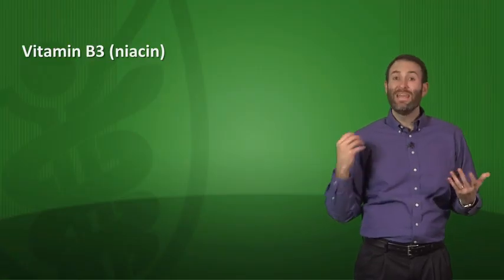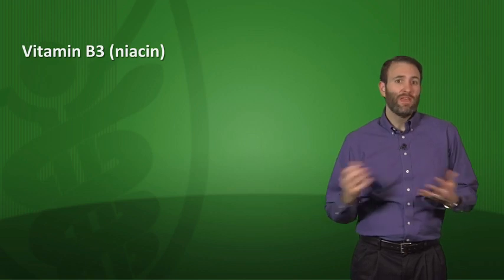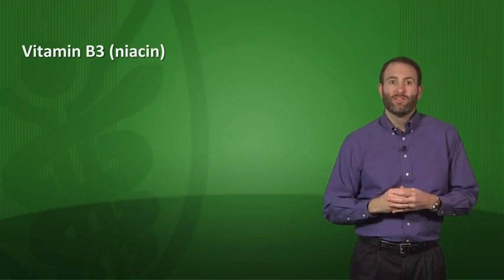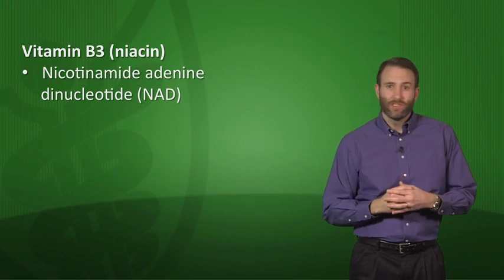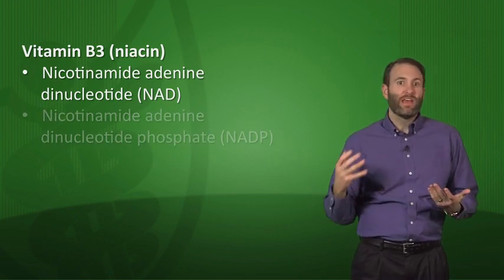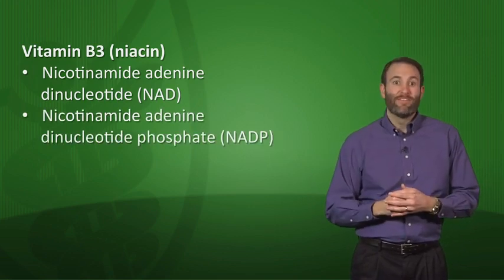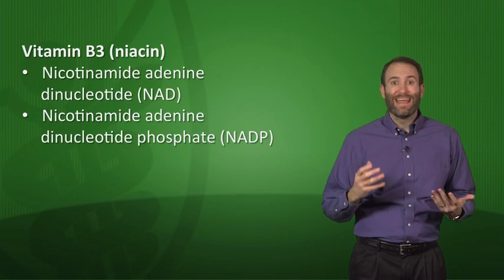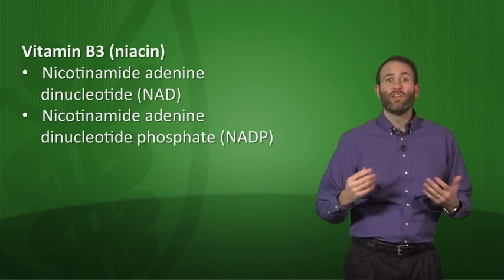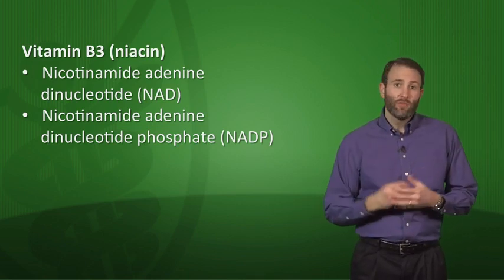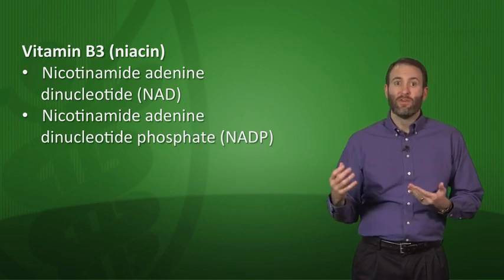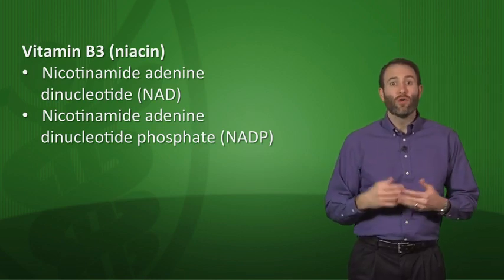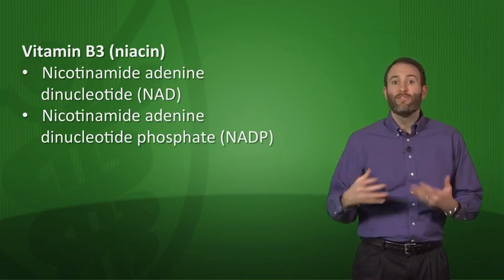Moving on to vitamin B3, also known as niacin. Vitamin B3 has two active compounds: nicotinamide adenine dinucleotide (NAD) and nicotinamide adenine dinucleotide phosphate (NADP). These are important in redox reactions. From our lecture on amino acids, these are derived from tryptophan, so you can make your own niacin if you have tryptophan.